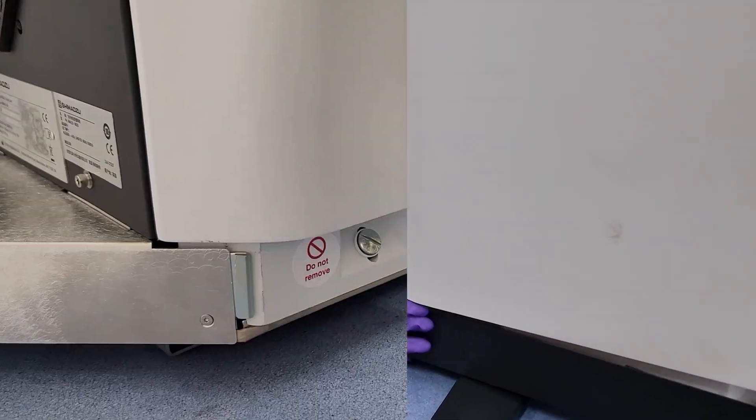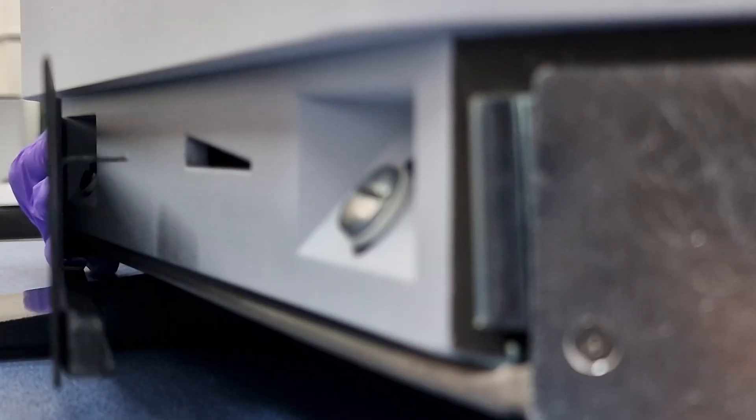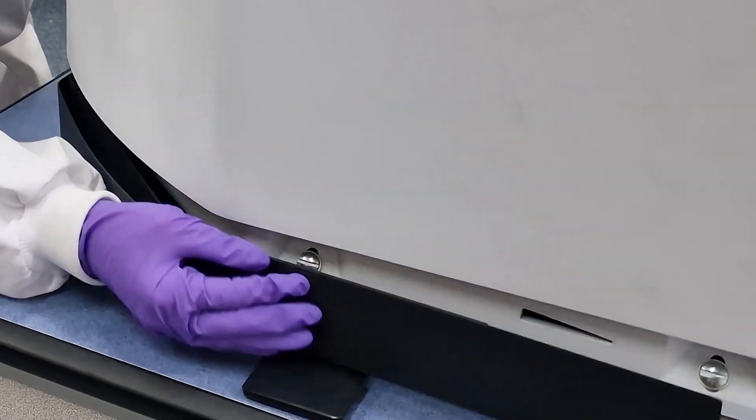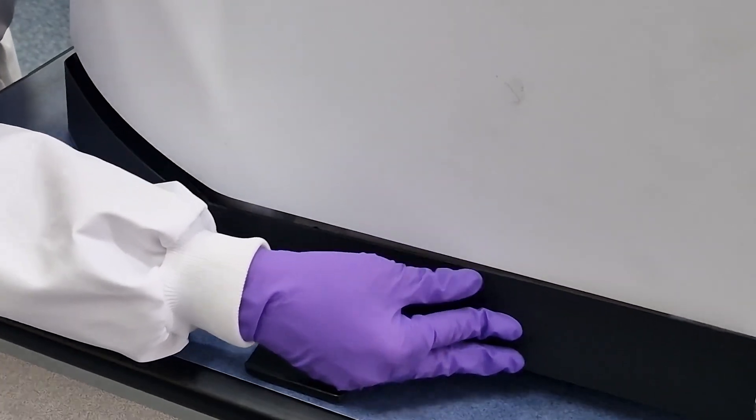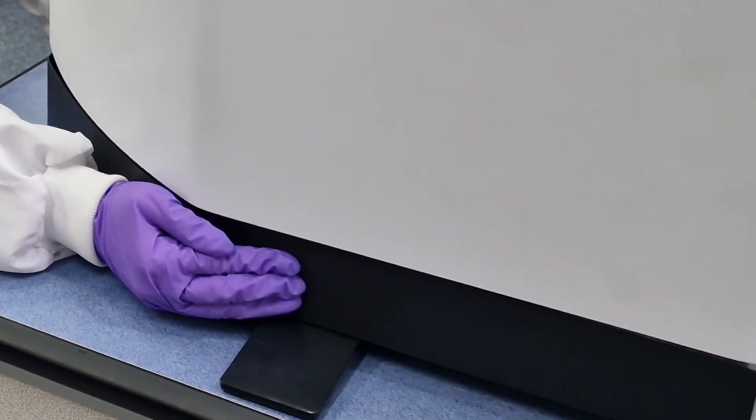Slide the lower front cover onto the base of the instrument. Ensure the hooks on each side of the cover engage with the corresponding slots. Push the cover forward until the magnets engage.